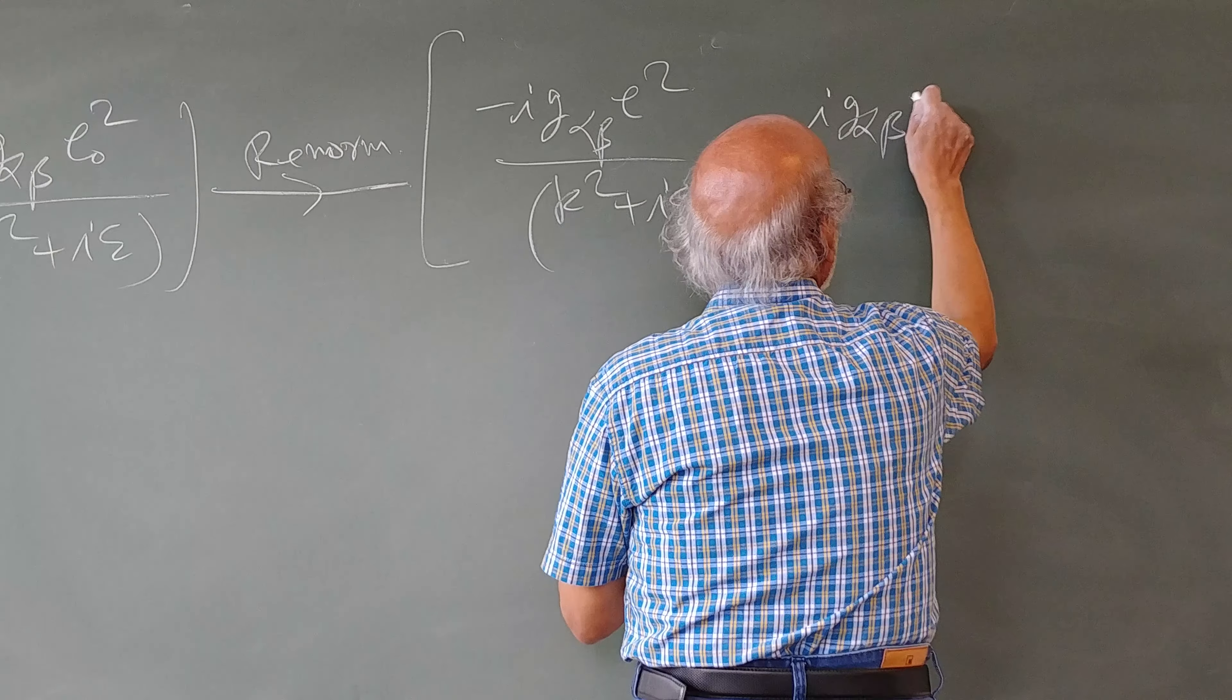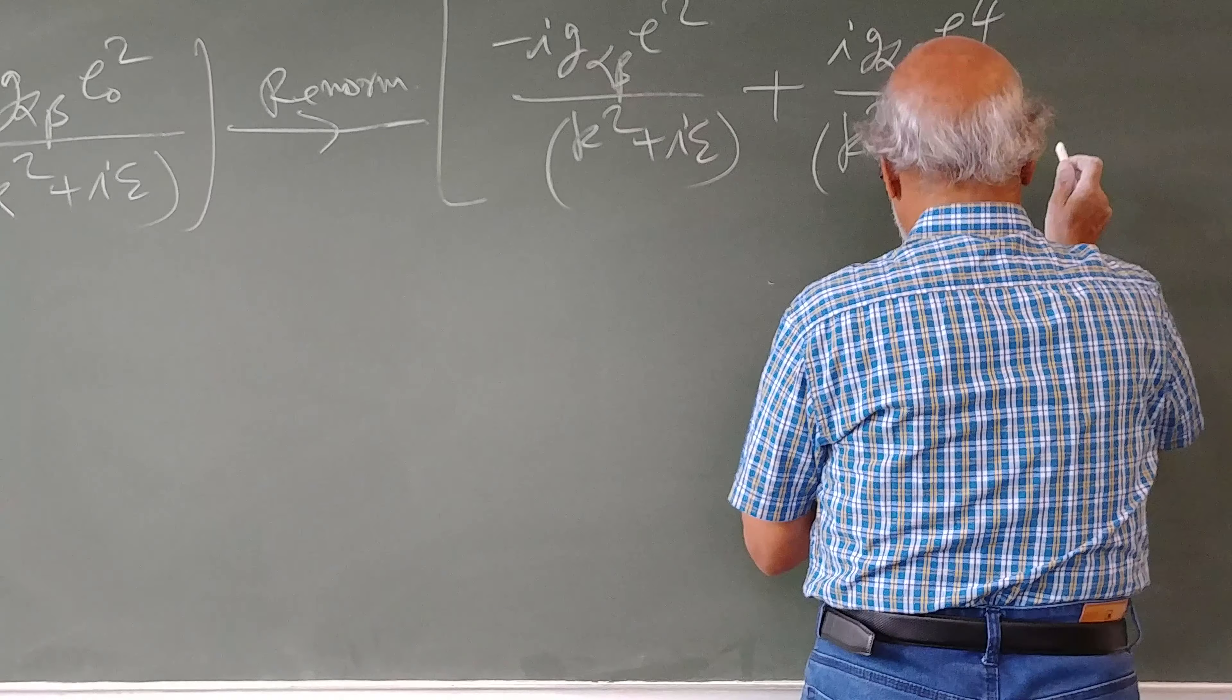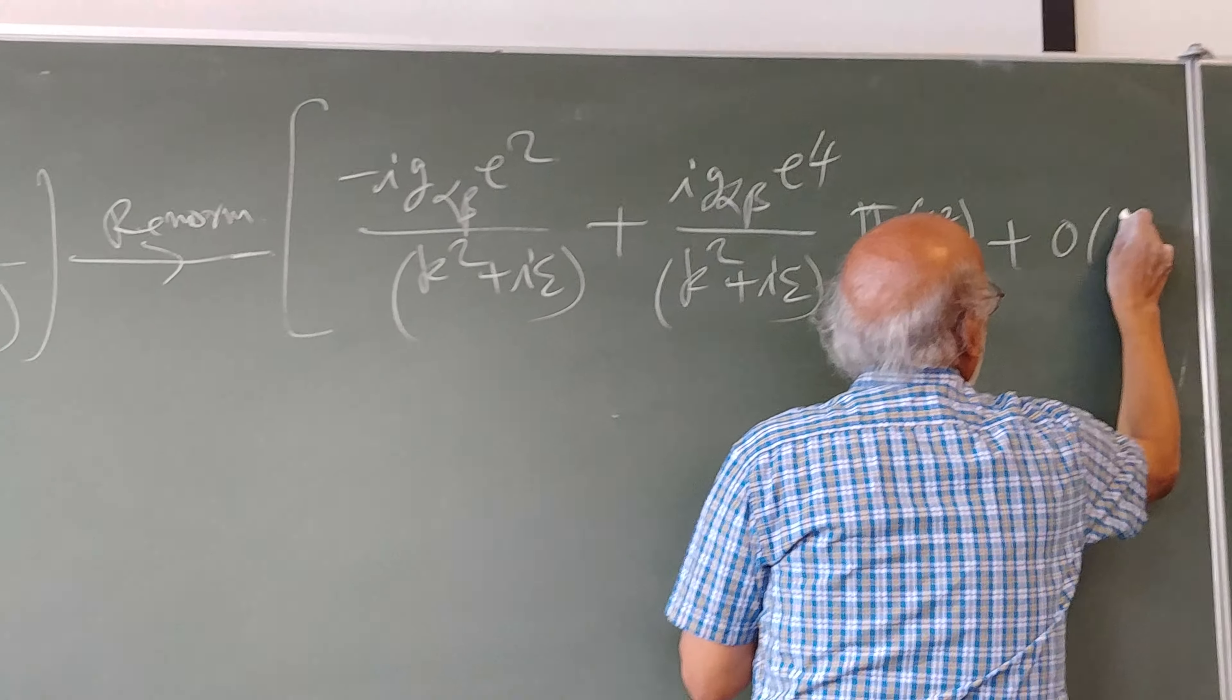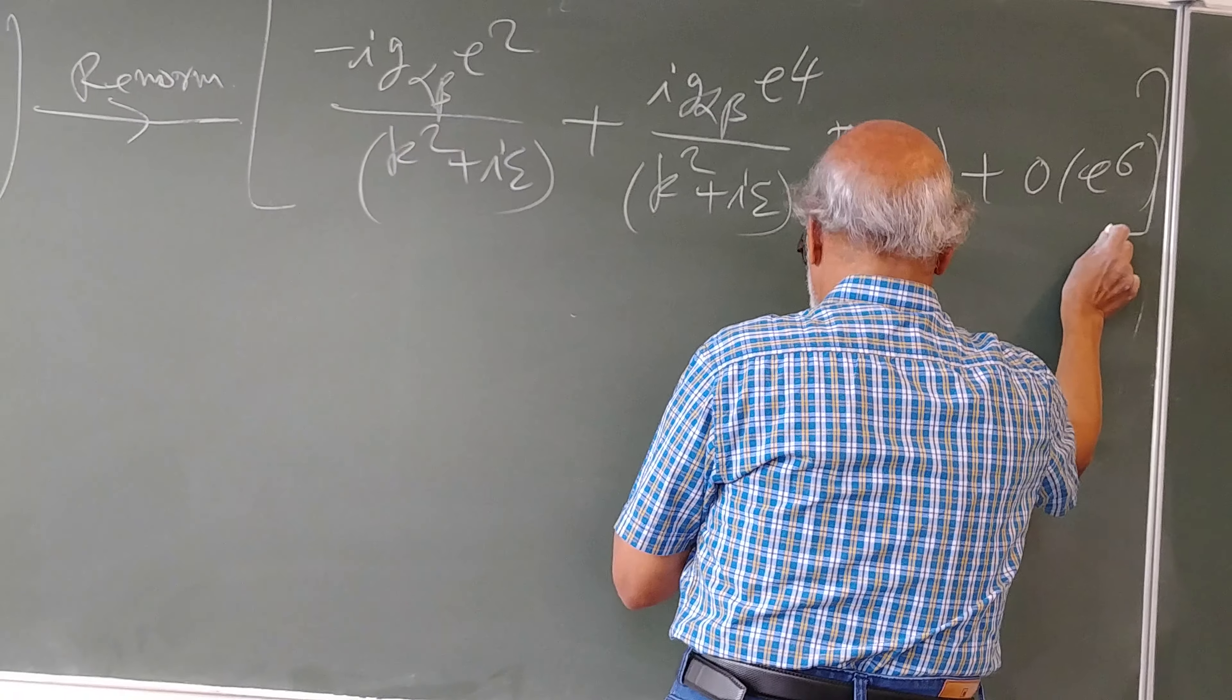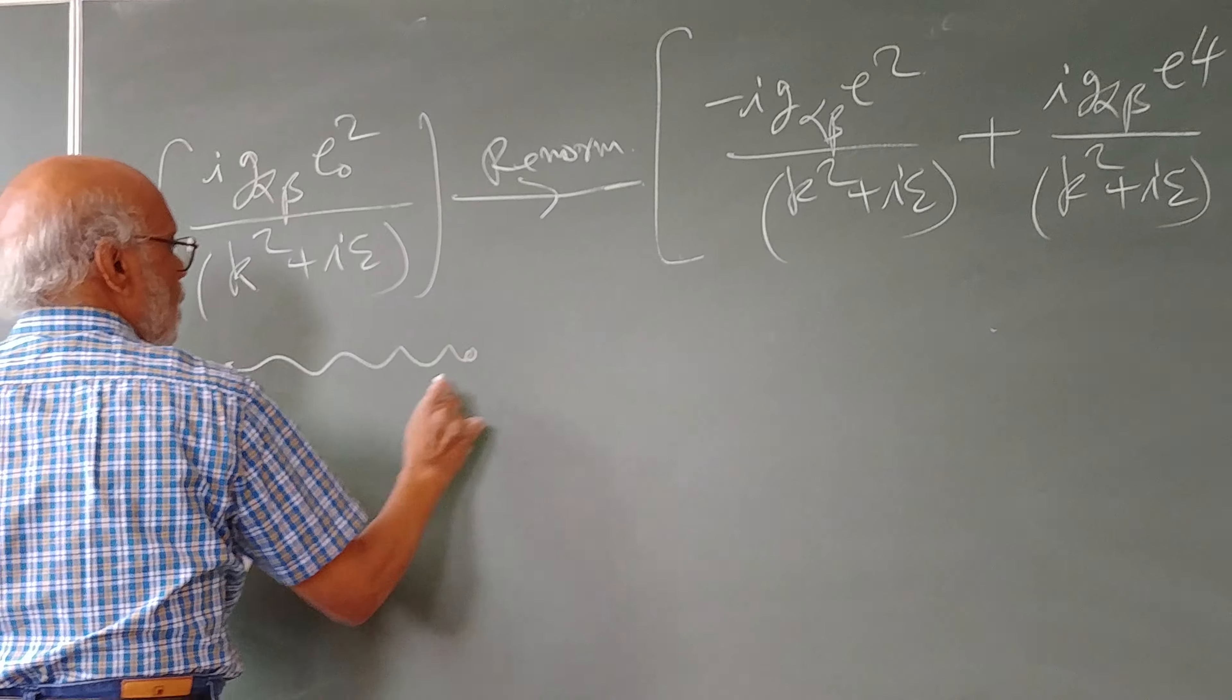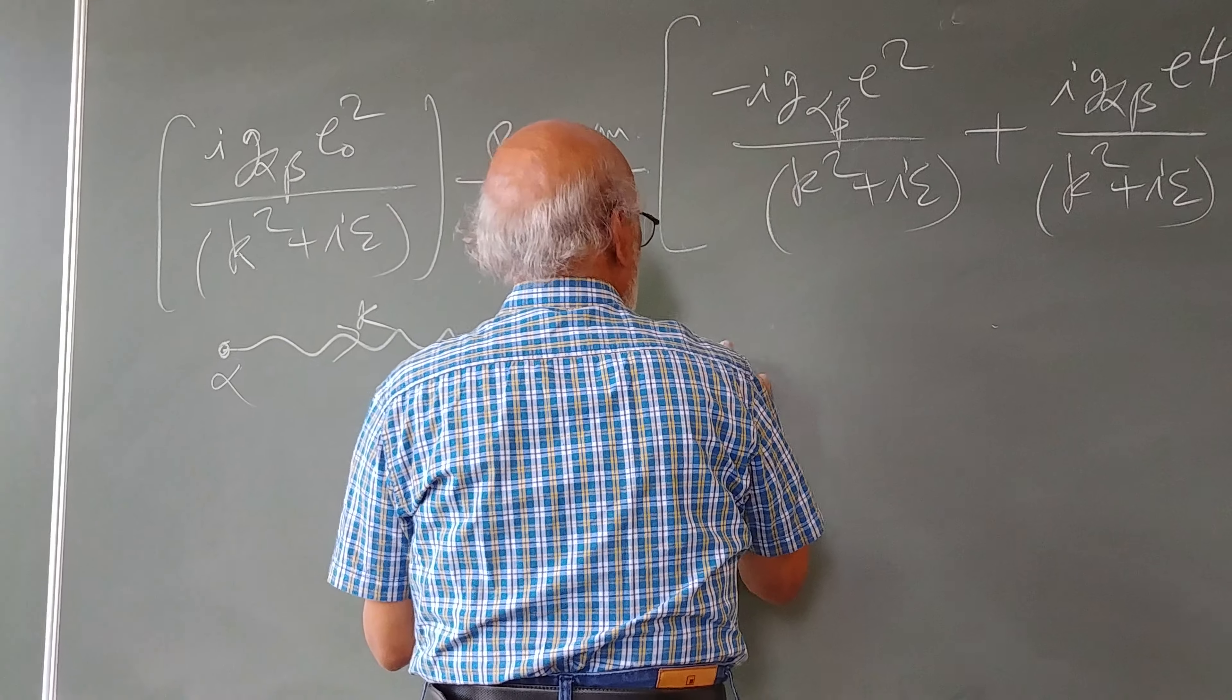i g alpha beta e to the power 4 k square plus i epsilon phi c k square plus order e6. Let me write down in terms of the diagrams. So alpha beta and k and this gives me.